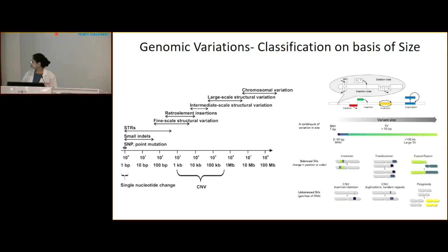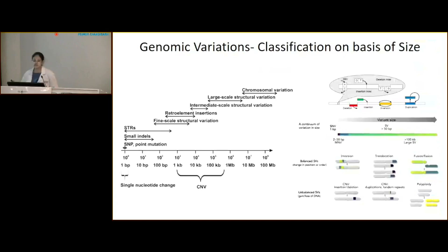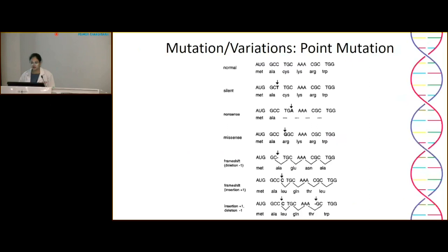Structural variations can be balanced, unbalanced, translocation, fusion, fission, etc. To revise a few terms on point mutations or single nucleotide variations, which we frequently encounter in sequencing reports.